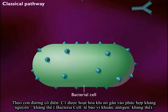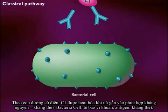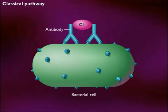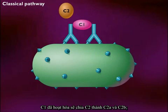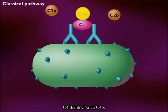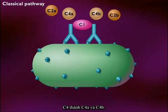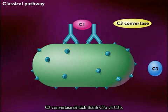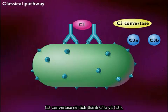In the classical pathway, C1 becomes activated when it binds to an antigen-antibody complex. The activated C1 then cleaves C2 into C2A and C2B, and C4 into C4A and C4B. C2B and C4B combine to form a protease called C3-convertase, which then cleaves C3 into C3A and C3B.